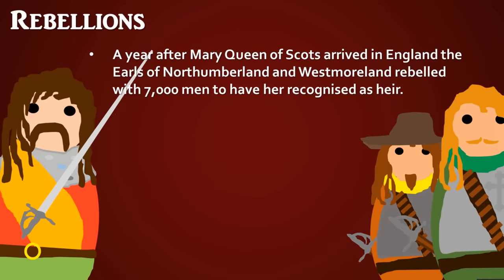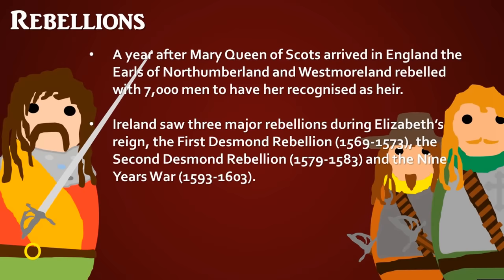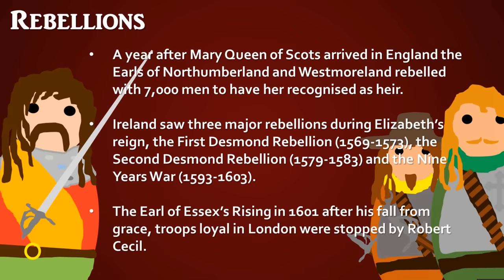A year after Mary Queen of Scots arrived in England in 1568, the Earls of Northumberland and Westmoreland rebelled in 1569 with 7,000 men — not to replace Elizabeth but to have Mary recognised as heir — though they were put down. Ireland saw three major rebellions as Elizabeth tried to consolidate control: the First Desmond Rebellion from 1569 to 1573 was put down; the Second Desmond Rebellion from 1579 to 1583 was more dangerous, involving Spain and the Pope; and the Nine Years' War from 1593 to 1603, fought mostly in Ulster, saw the Spanish send around 3,000 troops, though the rebellion was ultimately suppressed without a Spanish invasion of England.